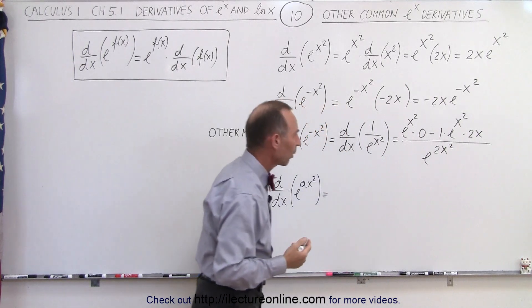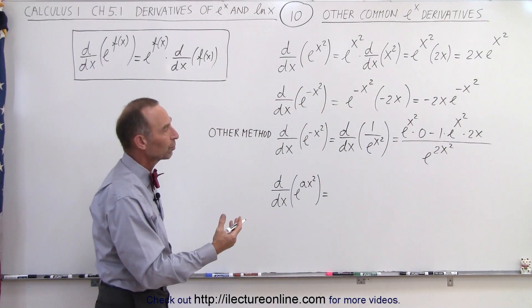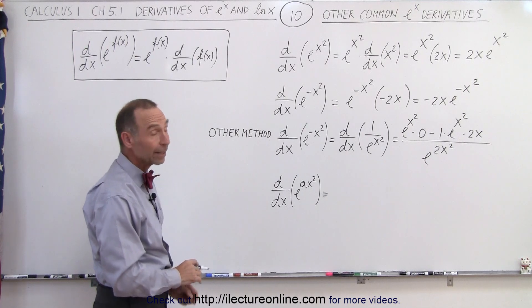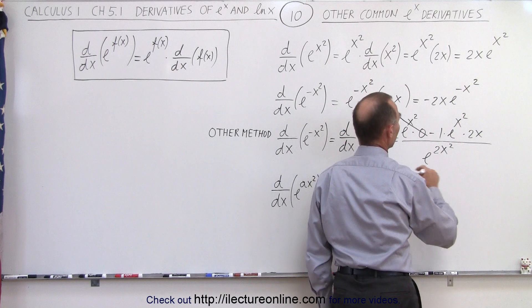Right? So when you square a function that has an exponent like that, you simply double the exponent when you're squaring it. Okay, now let's simplify this and see what we get. So this, of course, goes to 0.